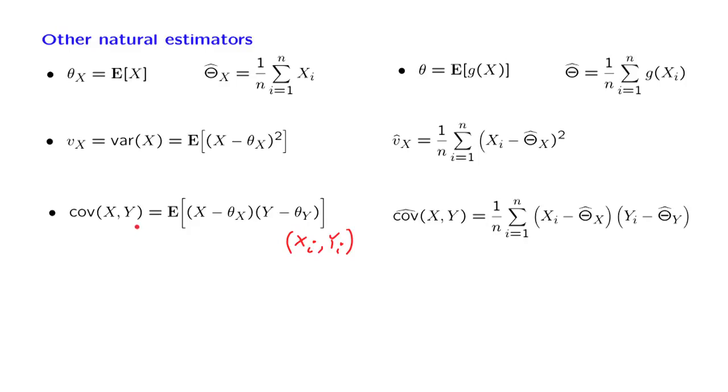And once we have estimates of a covariance and of variances, then we can use that to estimate correlation coefficients. Look at this formula, which is the definition of the correlation coefficient. If we just replace all quantities involved here by corresponding estimates, this gives us an estimate of the correlation coefficient.